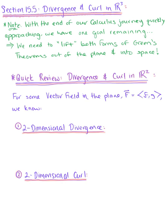In section 15.5, we are exploring divergence and curl in three dimensions. As we approach the end of our calculus journey together, we have one important goal remaining: we need to lift both forms of Green's theorem—the circulation form and the flux form—out of the plane and into space.